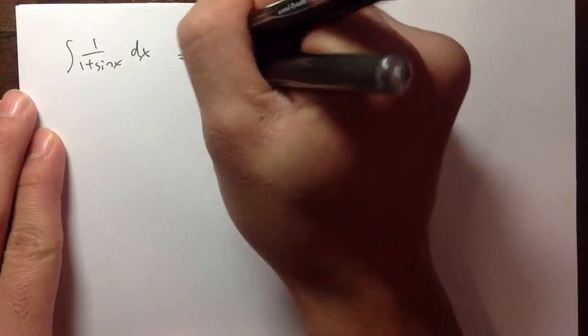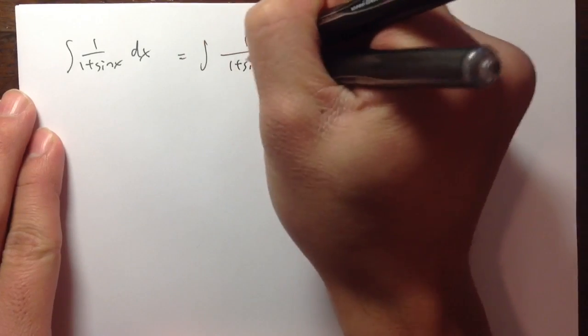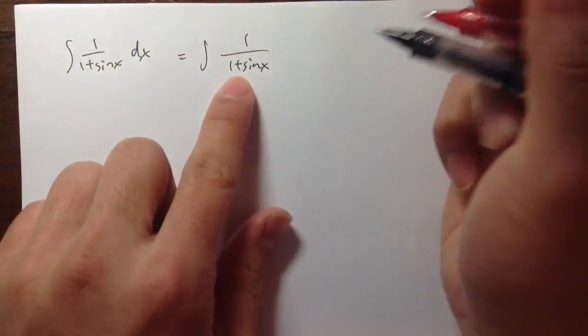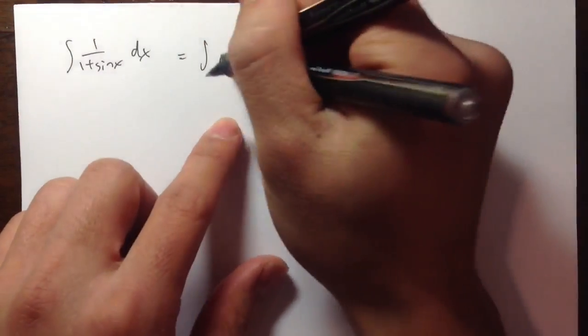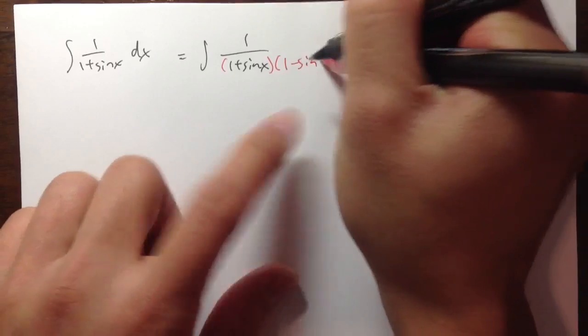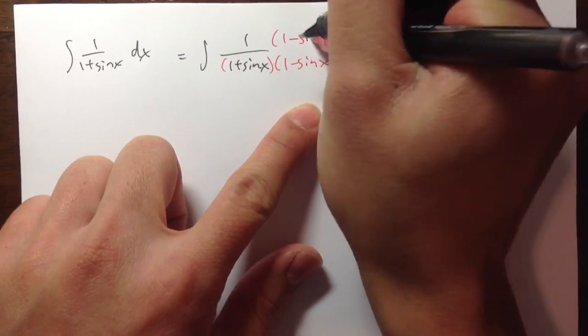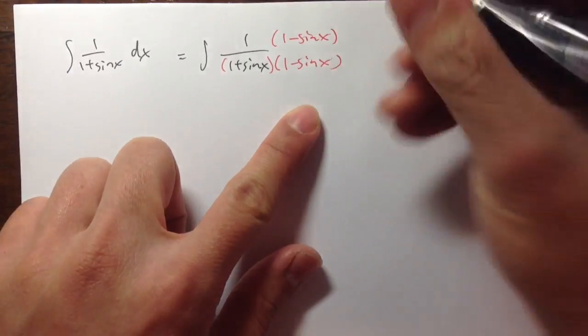Now I want to talk about some integrals. The first one is the integral of 1 over 1 plus sin x dx. To solve this, we are going to multiply the top and bottom by the conjugate of the denominator, which is 1 minus sin x, top and bottom like this.